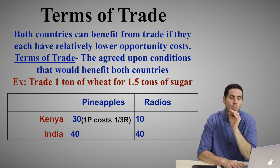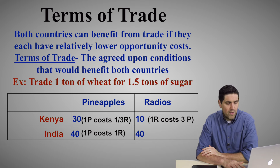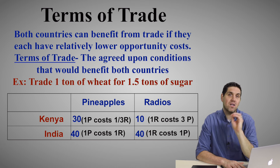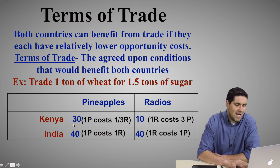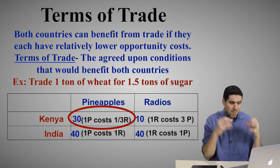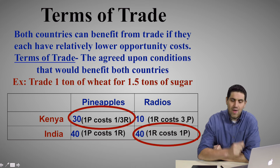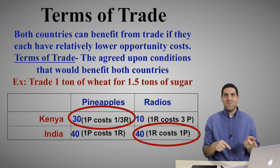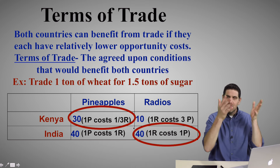For Kenya: each pineapple costs one-third of a radio, and each radio costs three pineapples. For India: one pineapple costs one radio, and one radio costs one pineapple. To figure out comparative advantage, find who has a lower opportunity cost. For pineapples: Kenya costs one-third of a radio, India costs one radio — Kenya has the lower opportunity cost, so Kenya should produce pineapples. For radios: India costs one pineapple, Kenya costs three pineapples — India has the lower opportunity cost, so India should produce radios. Quick and dirty check: 30 times 40 equals 1,200; 40 times 10 equals 400. Since 1,200 is higher, Kenya produces pineapples and India produces radios.